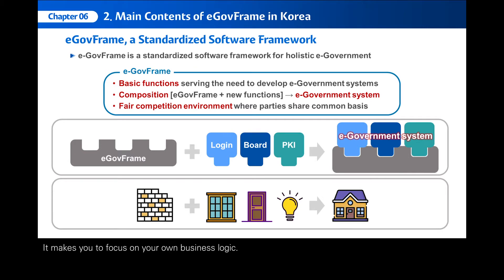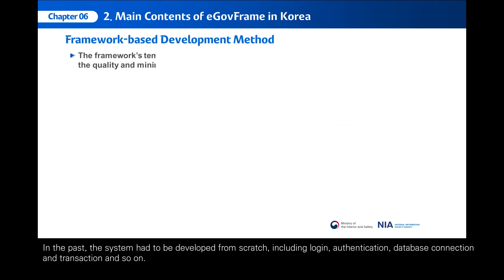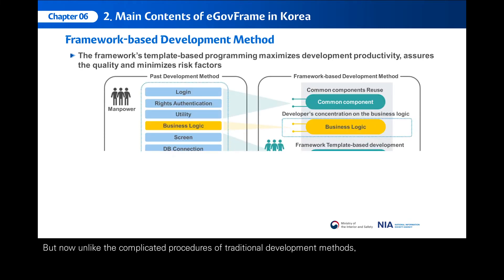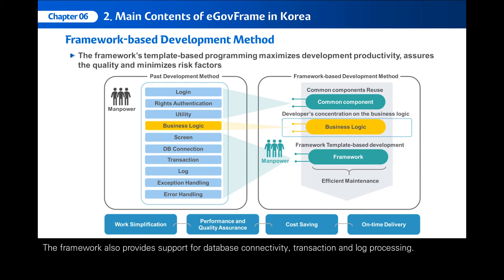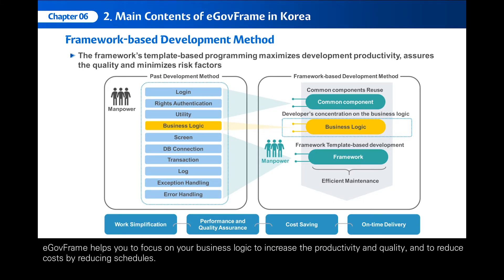It makes you focus on your own business logic. In the past, the system had to be developed from scratch, including login, authentication, database connection and transaction, and so on. But now, unlike the complicated procedures of traditional development methods, E-GovFrame can provide common reusable components such as login, authentication, and various utilities. The framework also provides support for database connectivity, transaction, and log processing. E-GovFrame helps you to focus on your business logic to increase the productivity and quality and to reduce costs by reducing schedules.